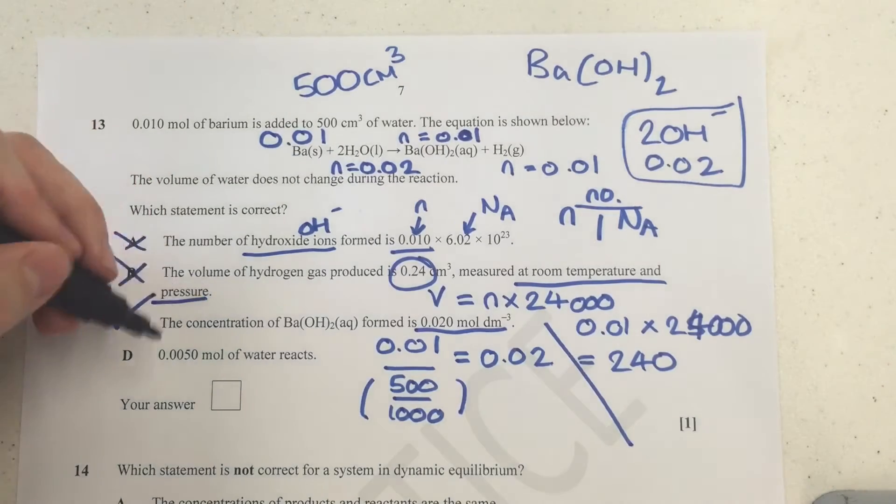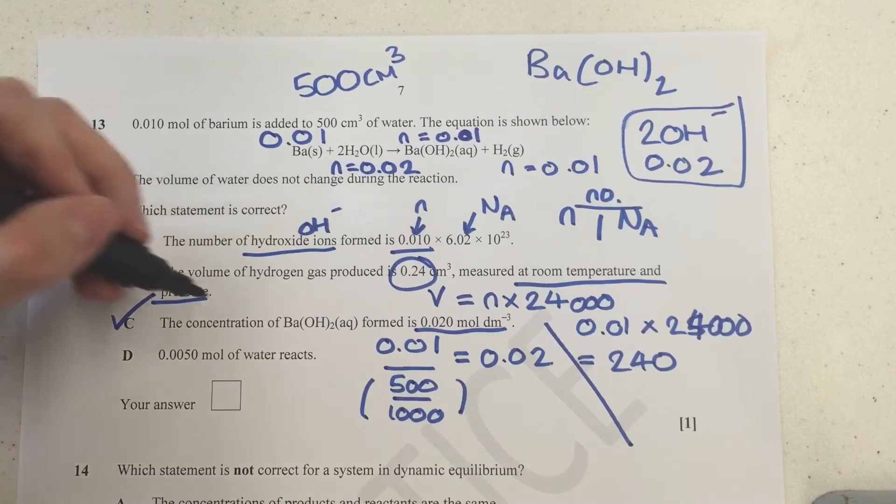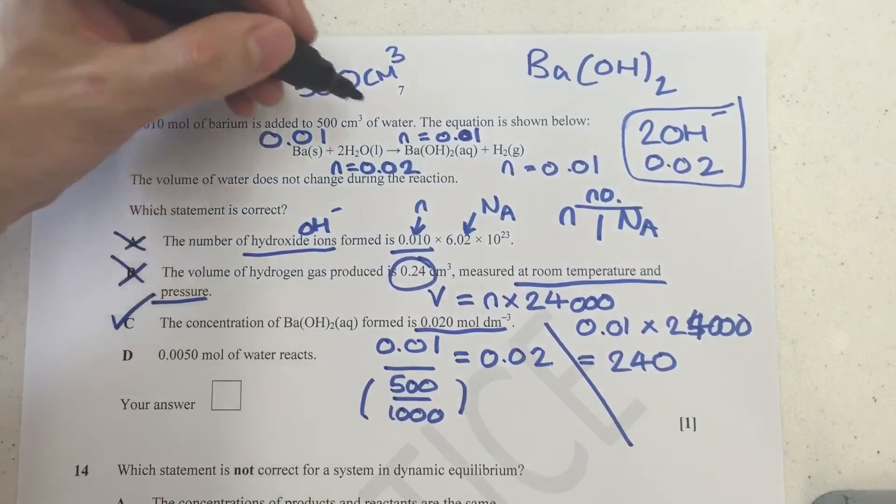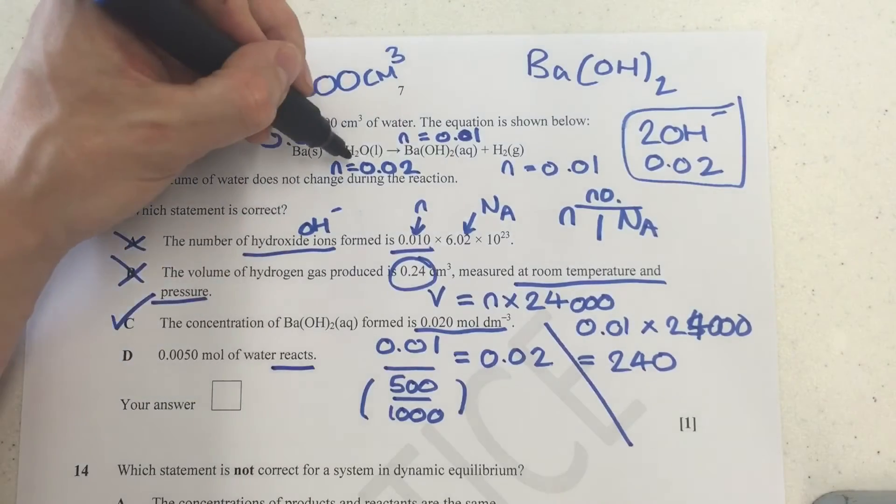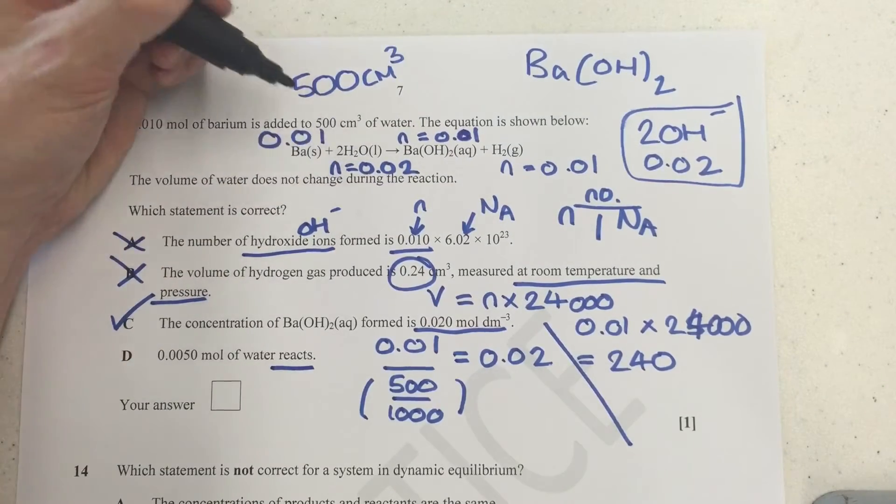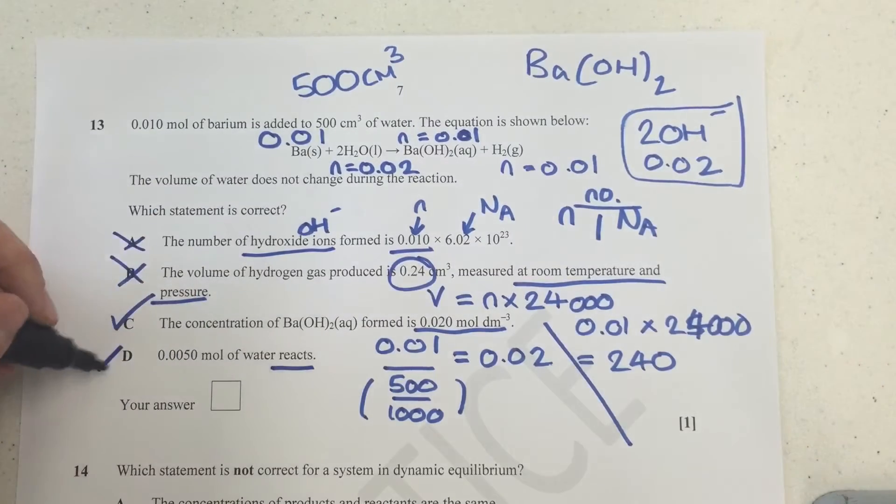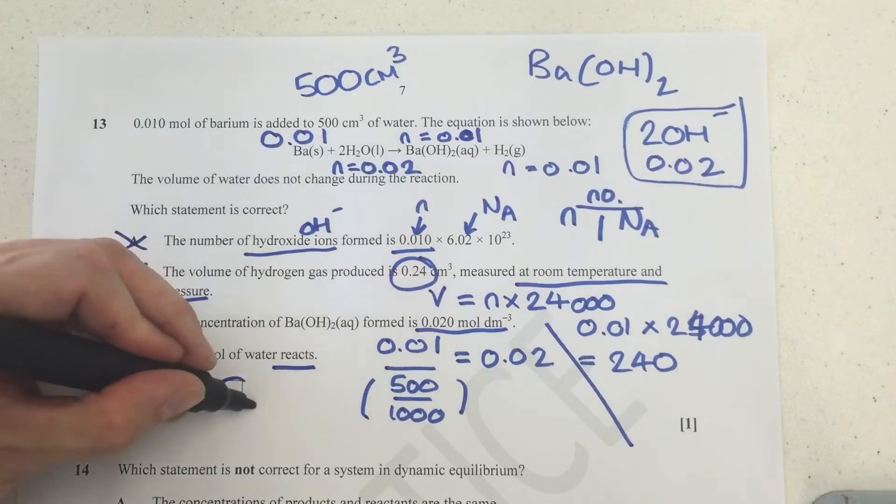Next one. 0.05 mol of water reacts. Now if we actually look at the number of moles, if we actually look up here, we can see that is absolutely not true whatsoever. We can see that the number of moles of water that reacts is actually two times the barium. It's not going to be divided by two, which is what they've done here. So that is categorically wrong. We can see it's nothing like this number. So our correct answer here is C.